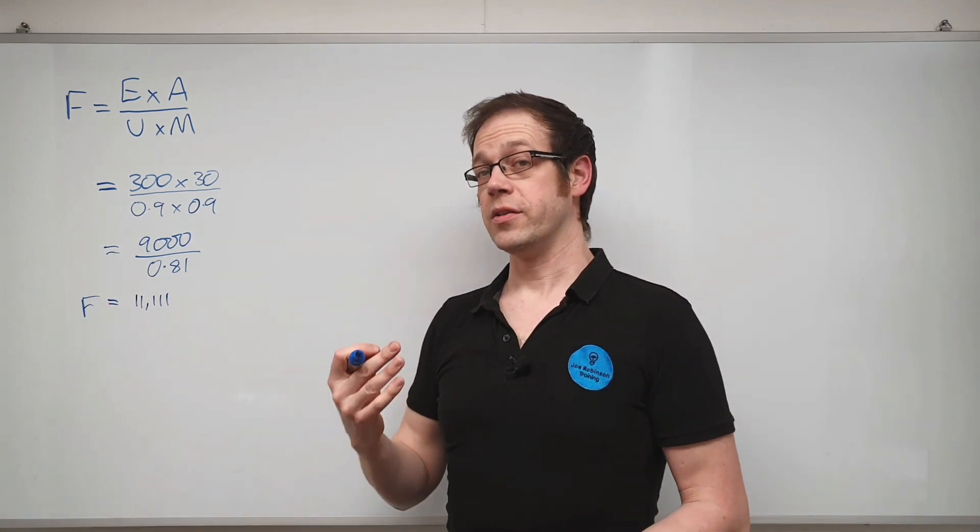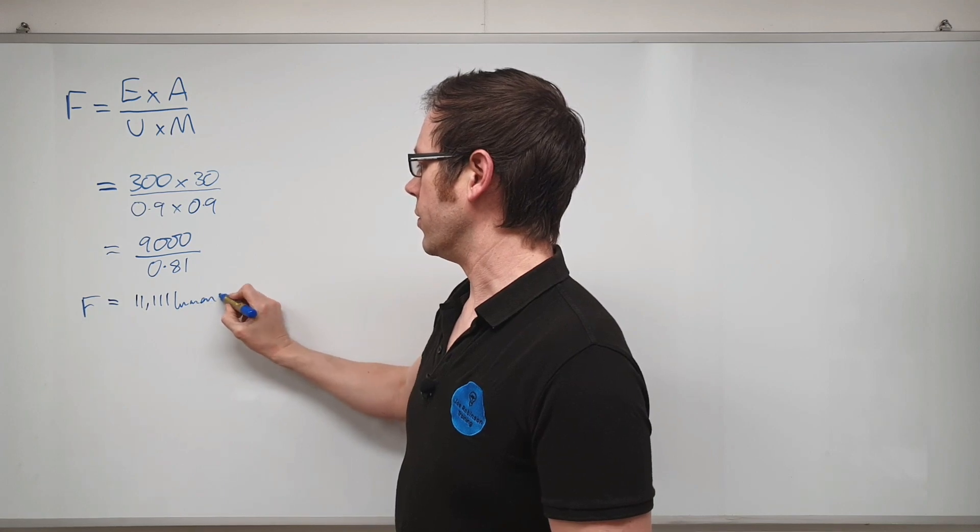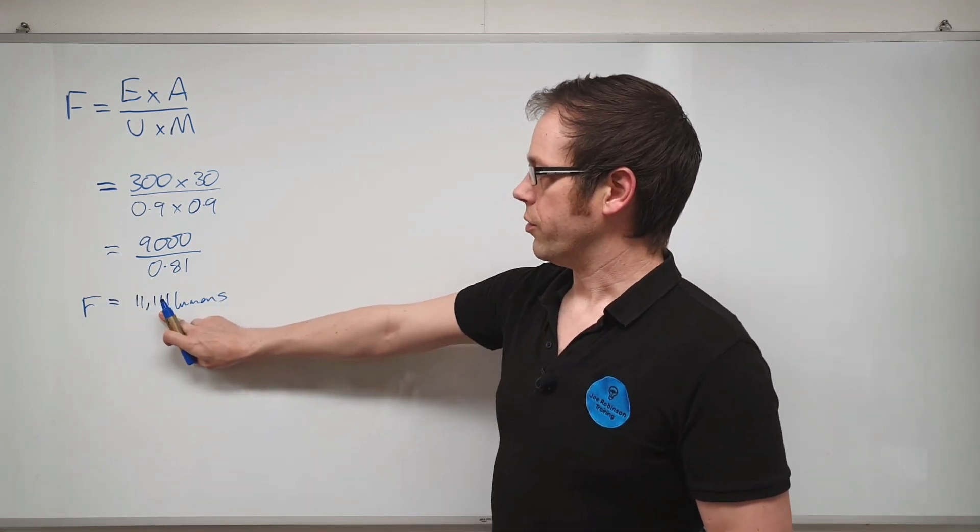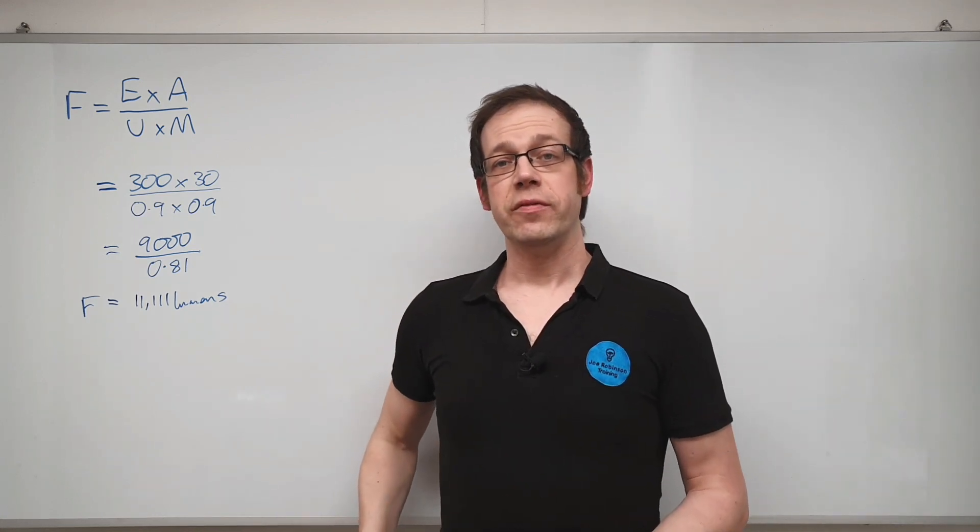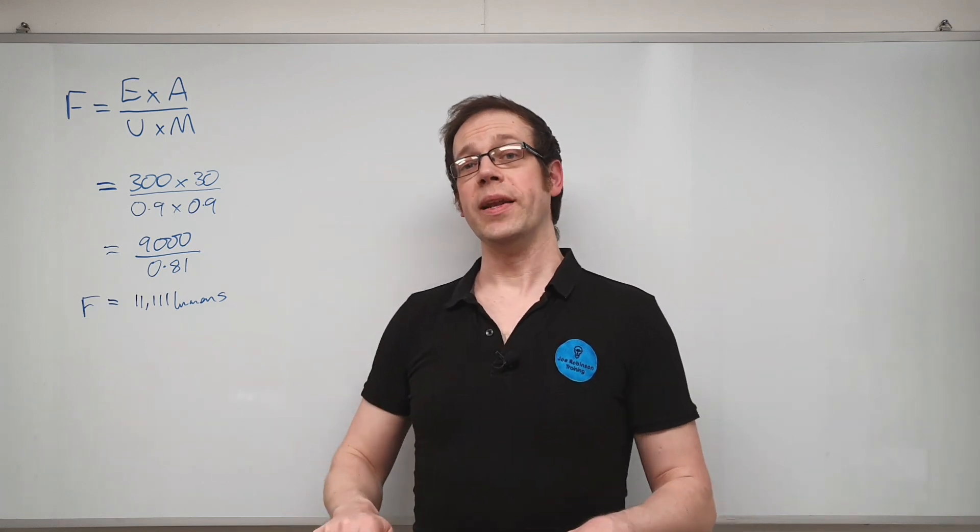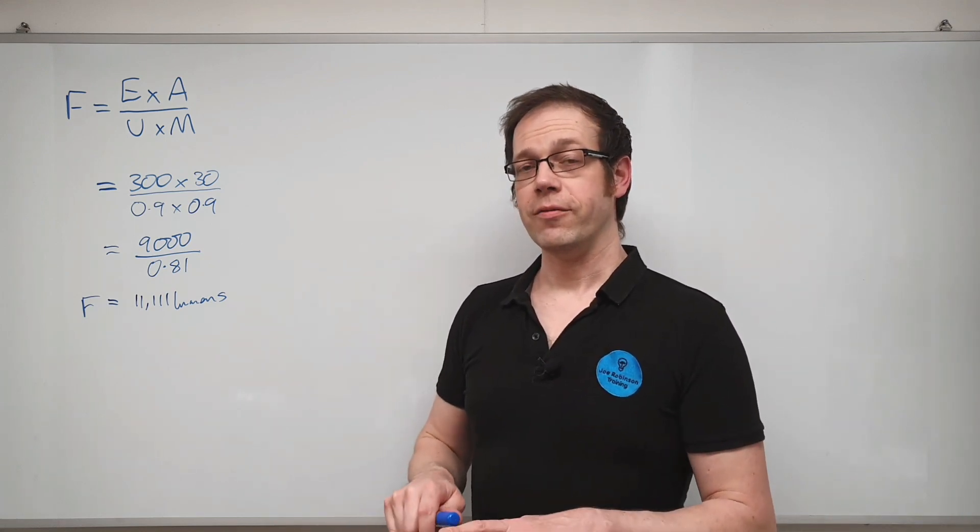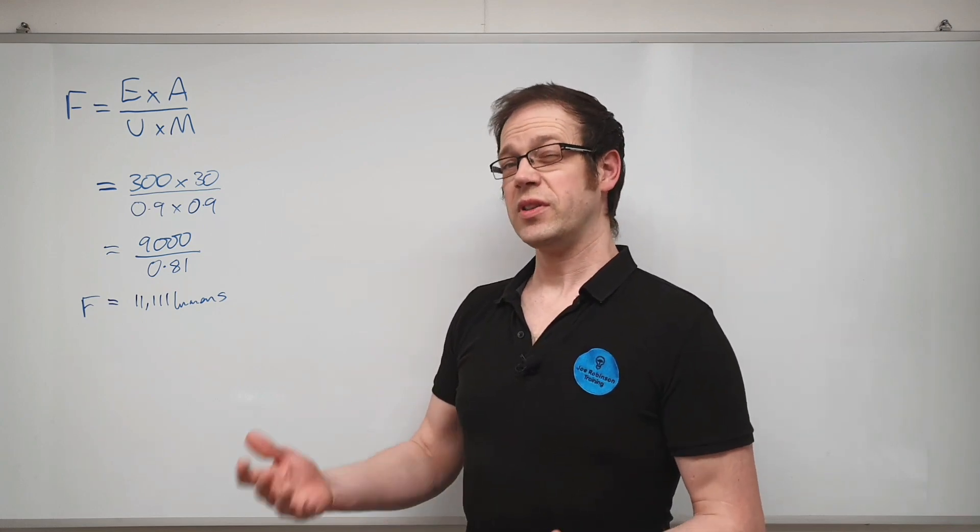Which remember is luminous flux or lumens, and is measured in lumens. So there we've got 11,111 lumens. That is the amount of light that we need our fittings in that space to give off in order to illuminate the surface to the right value of 300 lux in this case.